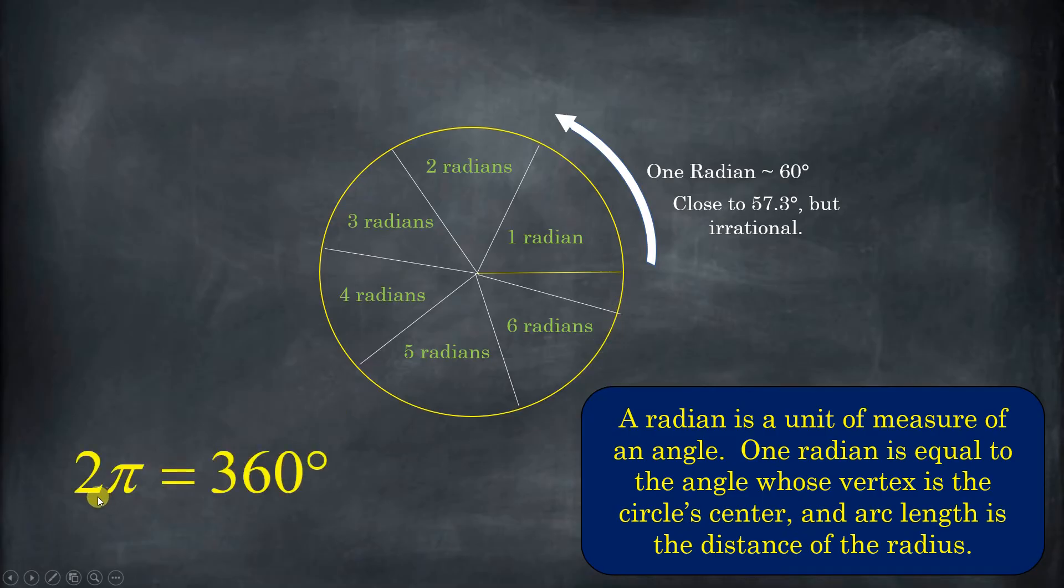Six radians is almost 360 degrees. And the reason that is, is because two times pi is a little more than six, it's like 6.28. So the number of radians doesn't fit exactly in 360 degrees. After six, we still have a little more than a quarter of a radian left.